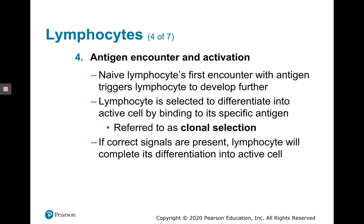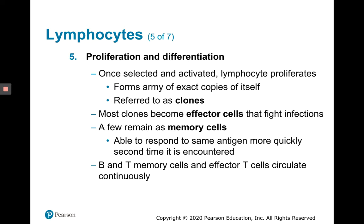When naive T and B lymphocytes finally encounter their one specific antigen, that triggers the lymphocyte to develop further. It is selected to differentiate — meaning change into an active cell — by binding to its specific antigen. Once bound and differentiated, it is then selected to clone itself and proliferate. If all signals are present, the lymphocyte not only differentiates but clones itself, forming an army of exact copies — essentially clones. Most of the clones become effector cells.